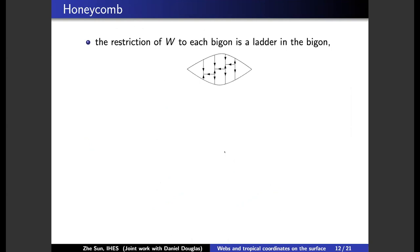And moreover, the good position also means that the restriction of the web to each bigon is a ladder. The ladder is something like this. So we put sign plus or minus on each side of this bigon. And there is a way to connect the two sides in a unique way by a ladder.